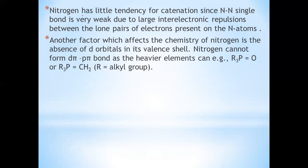Nitrogen exists as a diatomic molecule with a triple bond. Phosphorus, arsenic, and antimony form single bonds, while bismuth forms metallic bonds in its elemental state. Nitrogen also has little tendency for catenation, since the nitrogen single bond is very weak due to large inter-electronic repulsion between the lone pairs on nitrogen atoms. The absence of d orbitals in nitrogen means it cannot form dπ–pπ bonds as heavier elements can.